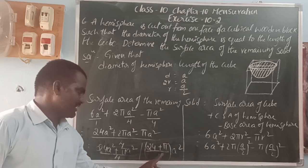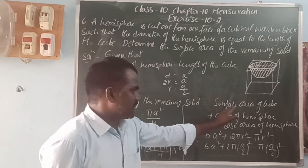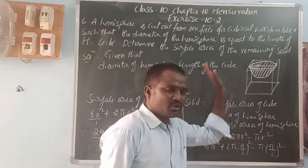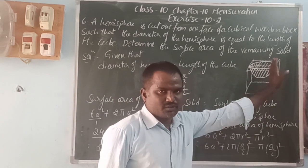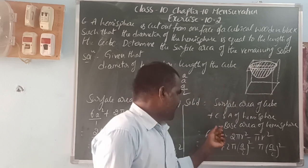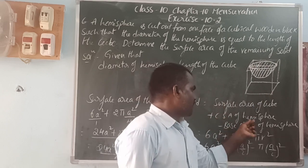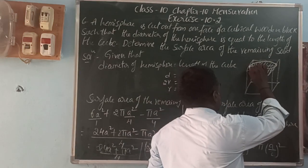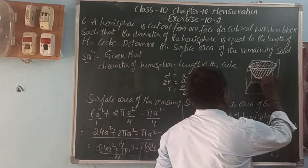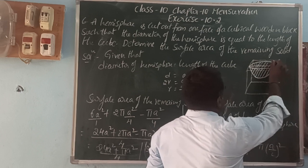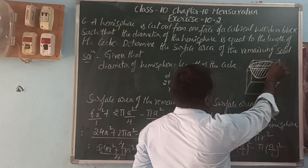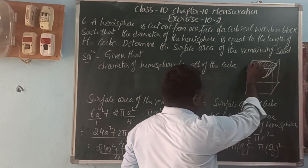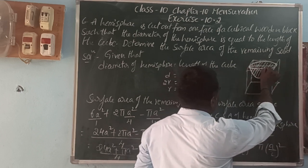To summarize: surface area of the remaining solid = total surface area of the cube + curved surface area of the hemisphere − base area of the hemisphere, giving us (24 + π)a²/4.